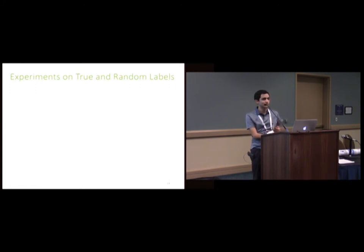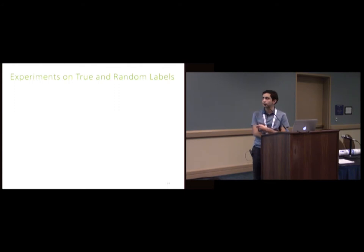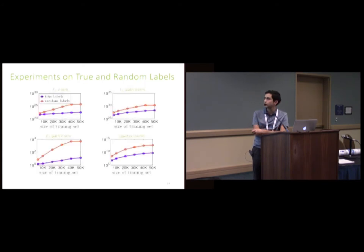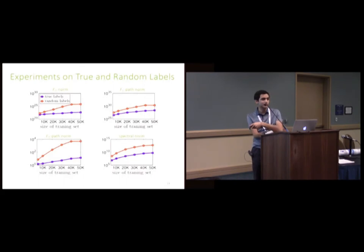Now let's do some experiments. This first experiment is on true versus random labels. We want to observe that these measures are higher on random labels, which shows they can capture the complexity of neural networks. We also want to see that these measures increase almost linearly with the size of the training set when learning random labels, because the network should memorize everything, but shouldn't increase as much on true labels. All the measures — including the one suggested by Bartlett and one from PAC-Bayes — can actually tell you which network was learned on random labels. This tells us SGD is picking neural networks at low norm.